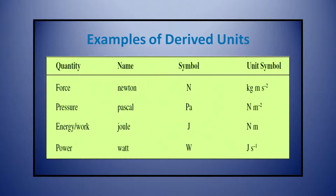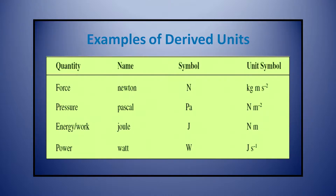You can see on the screen examples of many other derived units. For force, the unit is Newton (N), which in base units is kg·m/s². For pressure, the SI unit is Newton per meter squared, where Newton can again be expressed as kg·m/s². Energy's unit is Joule, which is Newton times meter. Power's unit is watt, expressed as Joule per second.